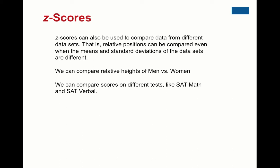Men's heights in America have a higher average and a different standard deviation than women's. Another application is comparing how you did on different tests, like the SAT math and the SAT verbal. Even though you get a raw score of 650 on the math and 625 on the verbal, the verbal score may be better relative to everyone else's verbal scores because different means and standard deviations result in different z-scores. Comparisons between two different data sets is another useful application for z-scores.